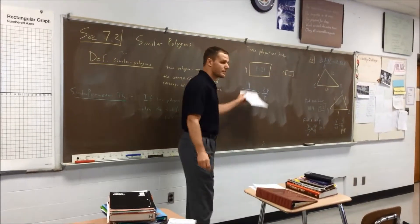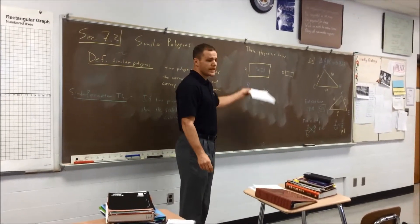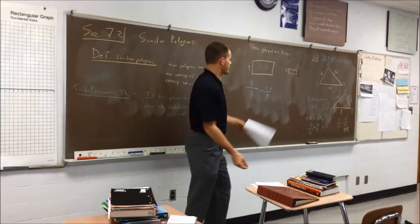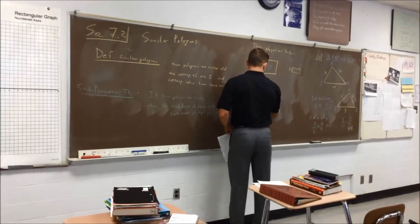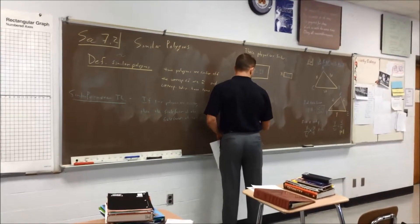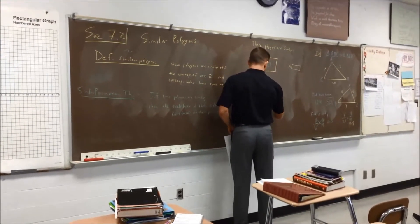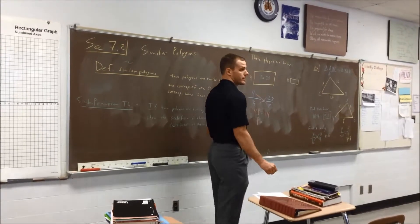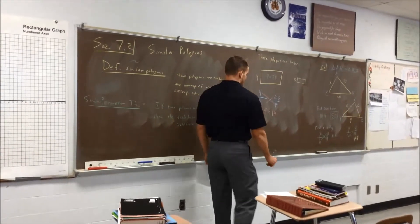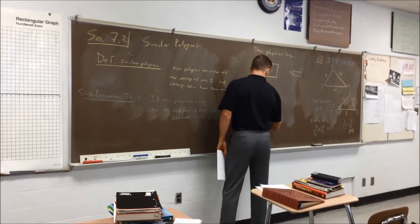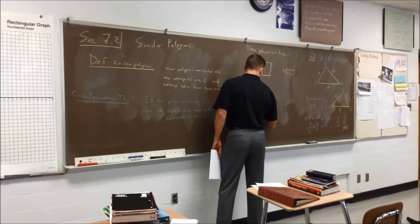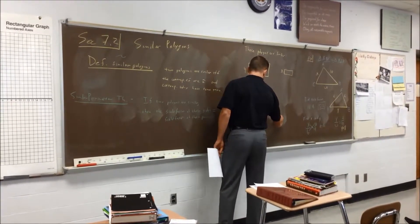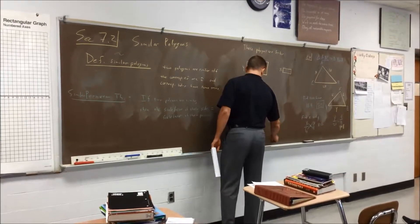Now, could we have gone ahead and simplified this? We can, but do we have to? Nah, it's fine. So 4p is equal to 14, so the perimeter of the smaller one is going to be what? 7 over 2, 3.5, yeah.